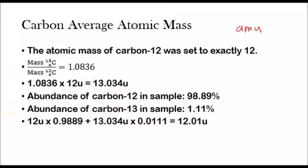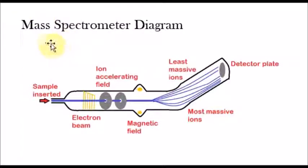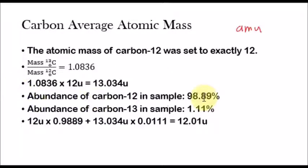This detector, this mass spectrometer, also told them that within the sample, 98.89% of all the carbon was carbon-12, and 1.11% of all the carbon was carbon-13.